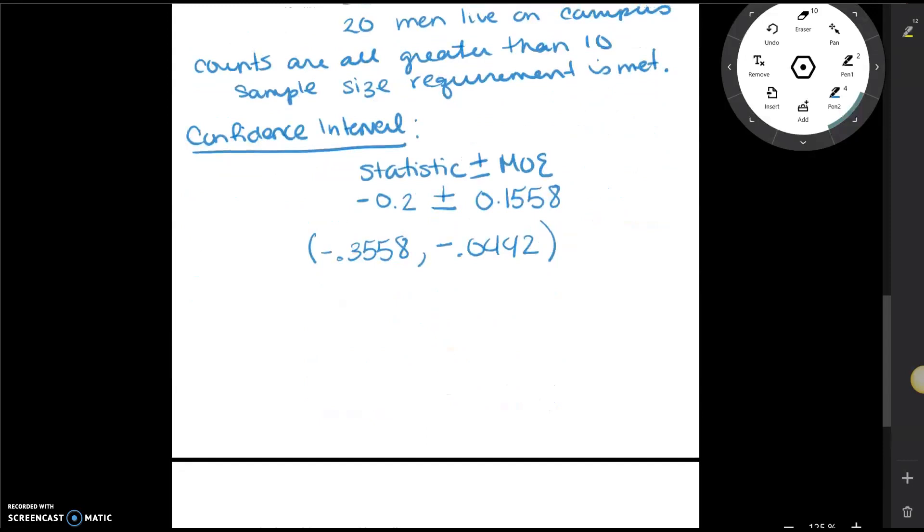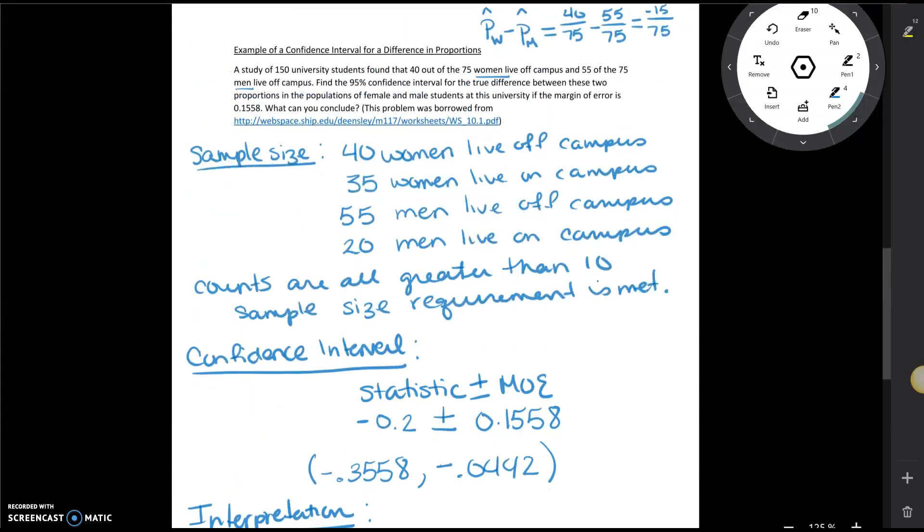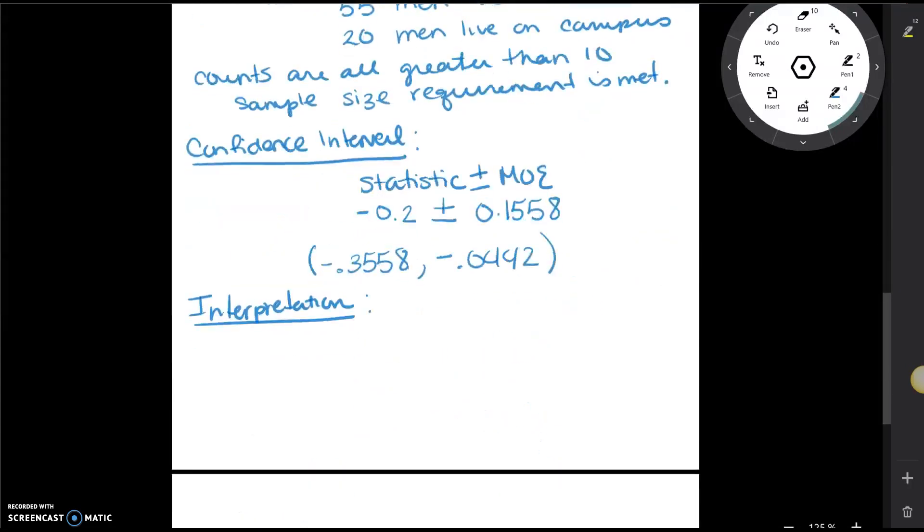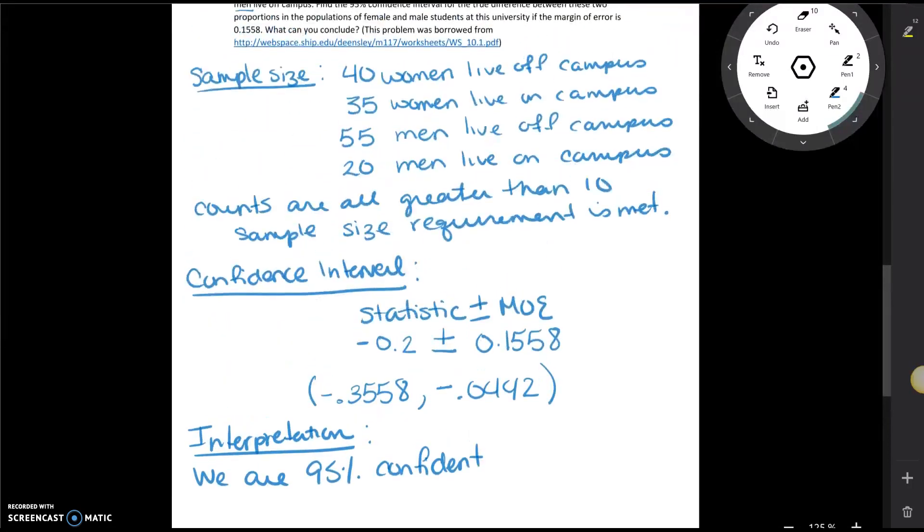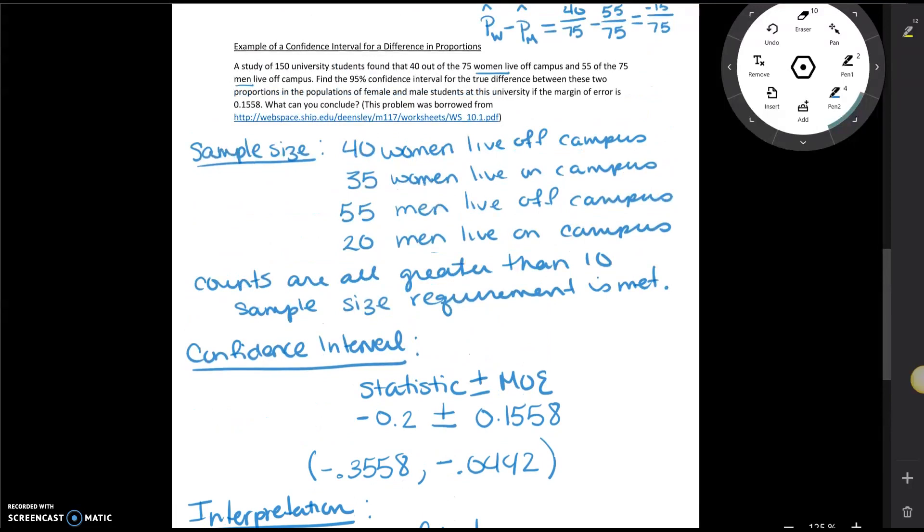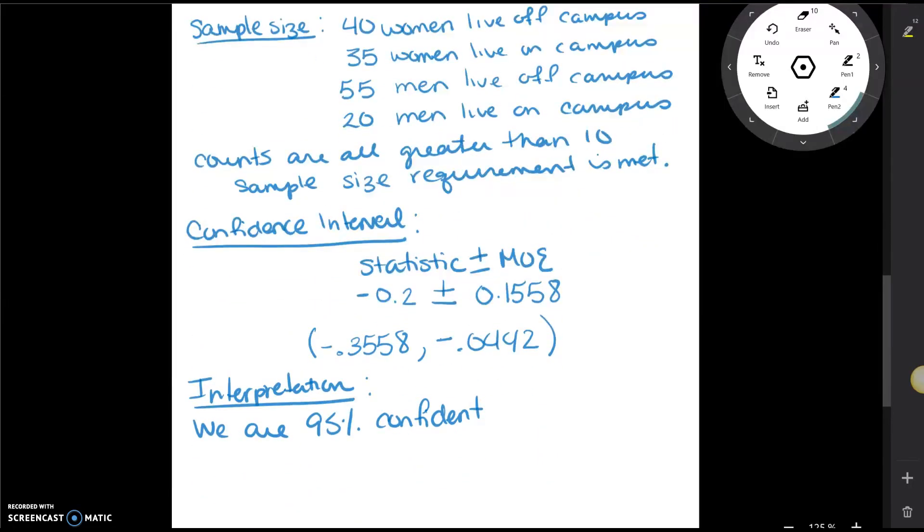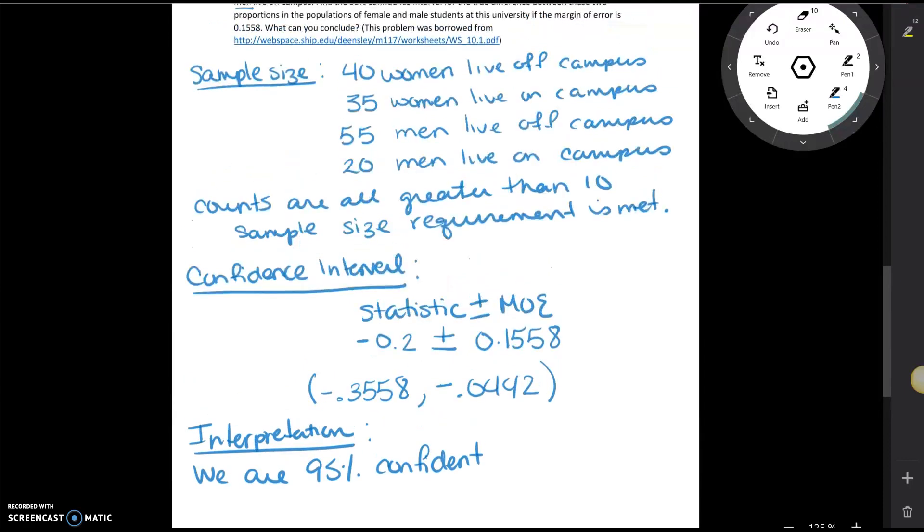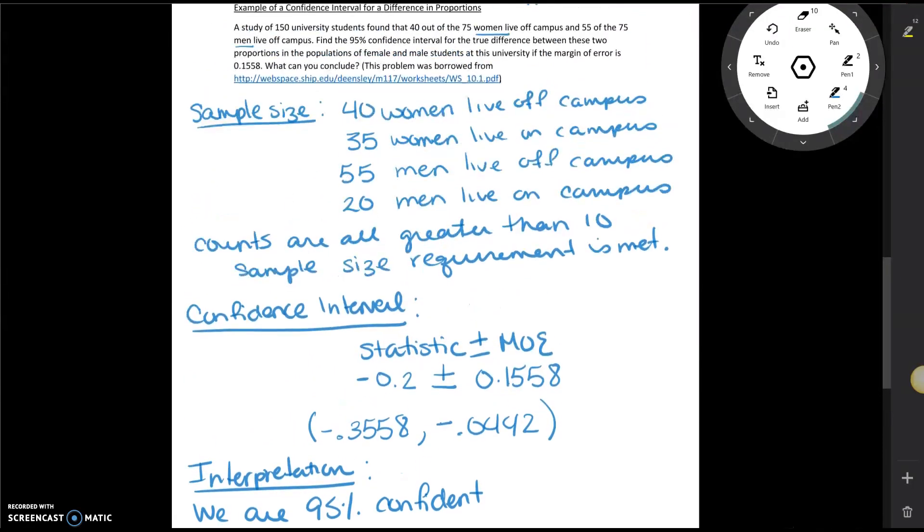All right so there is our range of reasonable values for the parameter. So last we can give our interpretation. Notice for this one we made a 95% confidence interval. So we are 95% confident. Now notice that this entire interval is negative. And since we had females listed first and it's negative that tells me that females...